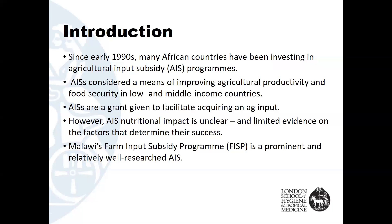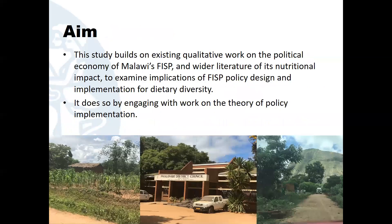Malawi's Farm Input Subsidy Programme, the FISP, is a fairly well-known example of an agricultural input subsidy program. This study builds on existing work on the FISP to examine implications of FISP policy design and implementation for dietary diversity, and it does so by engaging with work on theories of policy implementation.